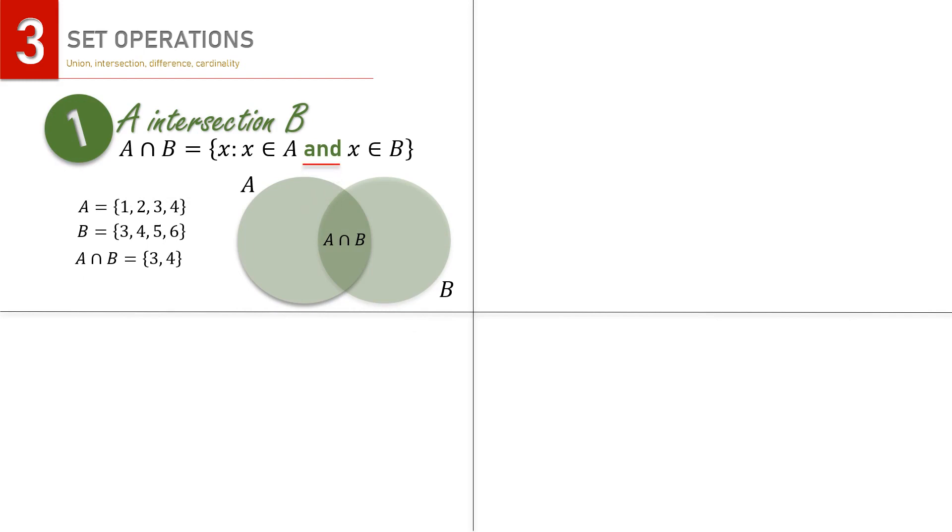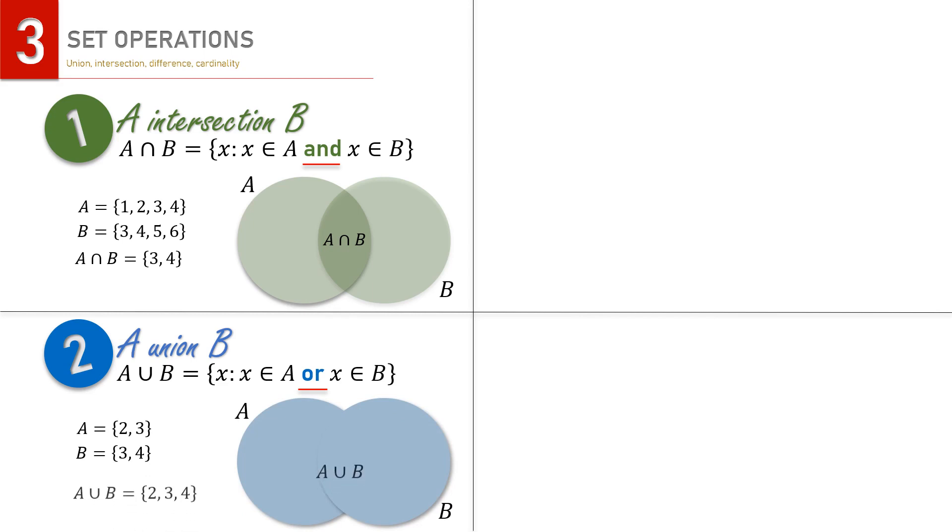The second set operation is called union, symbolized with U. The set of A union B consists of the elements that belong to set A or set B. OR is the keyword now. Suppose that we have set A, whose elements are 2 and 3. We also have set B, whose elements are 3 and 4. The set of A union B then includes all the elements of A and B.